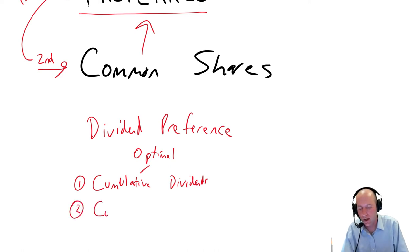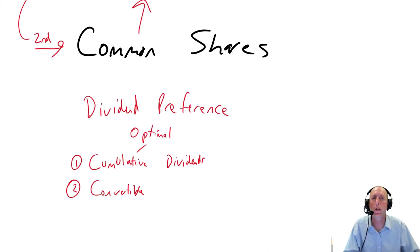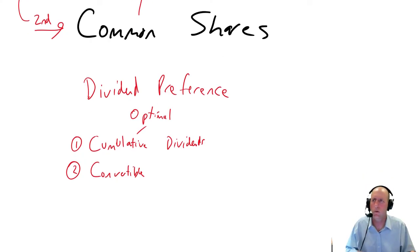Optional feature number two, and this is one that won't come up in our chapter. It's more for an intermediate class. Convertible. We can have the option of a preferred share to convert to a common share if we feel like the common share is the better way to go. So you hear about this in Silicon Valley. It's not really done with preferred shares as much. It's convertible notes, but they have notes payable that convert into common shares. Same can be done with preferred shares. They can convert into common shares at some agreed upon rate.